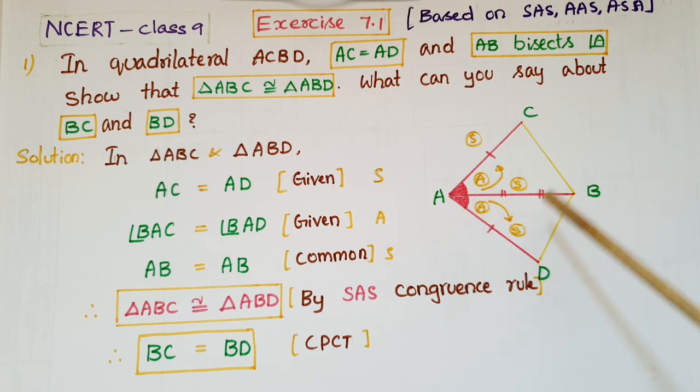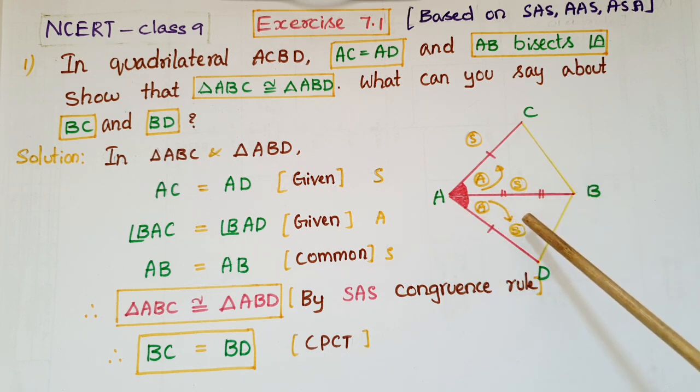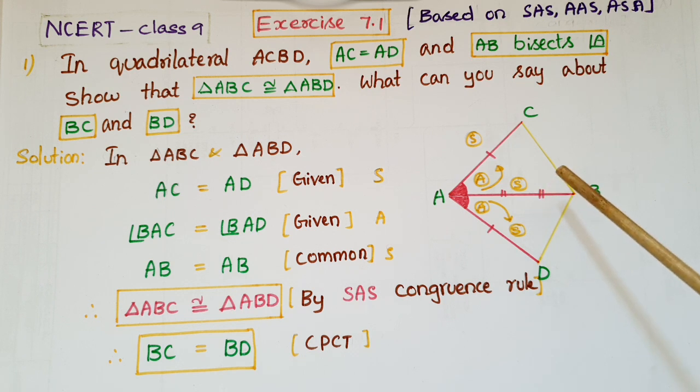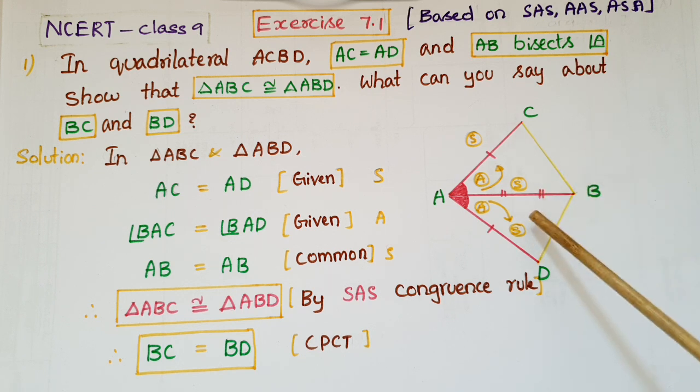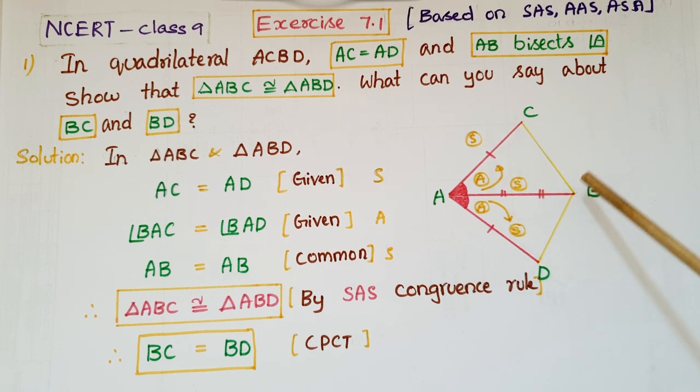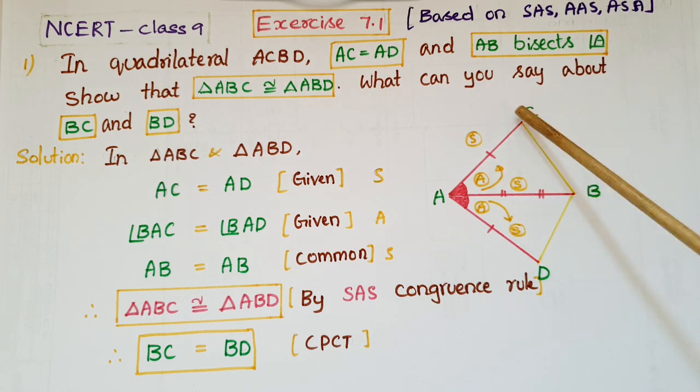Once these two triangles are congruent, we can equate the corresponding parts of these two triangles. So we can say that BC is equal to BD.